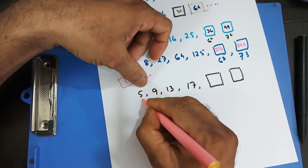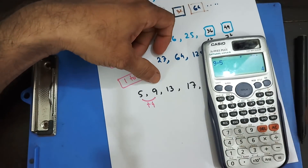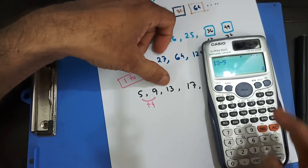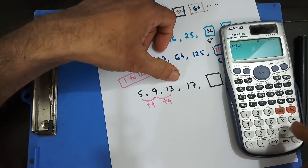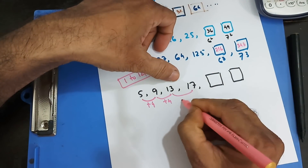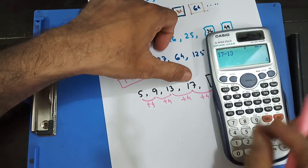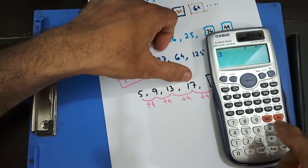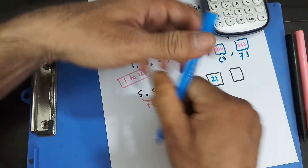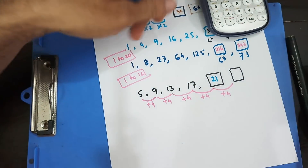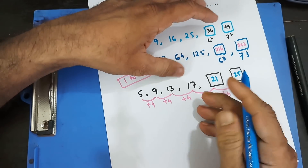They are following a rule that each number is 4 more than the previous number. You can check: 9 minus 5 is 4, 13 minus 9 is 4, 17 minus 13 is 4. So the next term is found by adding 4: 17 plus 4 gives you 21. Then again from 21, you add 4, so that gives you 25. So 21 and 25 are your next two terms.